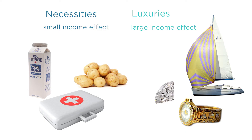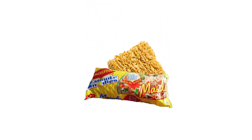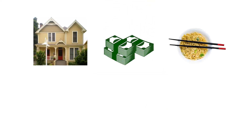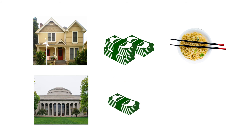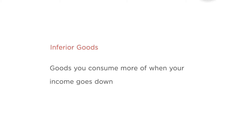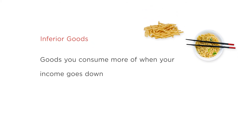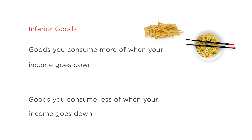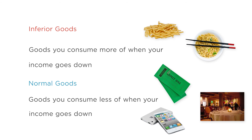In fact, for some necessities a cut in income can actually cause you to consume more of a good. Consider ramen noodles — a cheap but tasteless form of nutrition. When you live at home and your parents pay for things, you might not eat much ramen. But when you go to college and have to pay for things yourself, your income falls a lot and you might start consuming a lot more ramen. Getting poorer actually made you consume more. We call goods with a negative income elasticity inferior goods — goods you consume more of when income goes down, like ramen or cheap fast food. For most goods, though, you consume less when you get poorer; these are called normal goods, like movie tickets, iPhones, or nice dinners out.